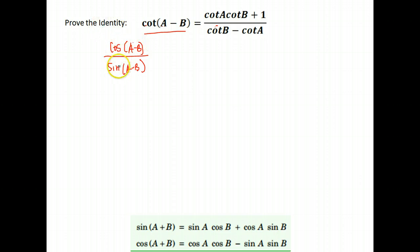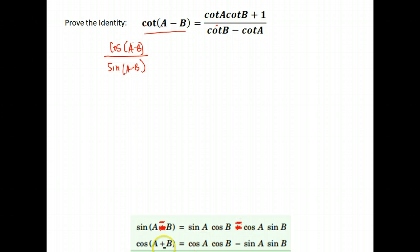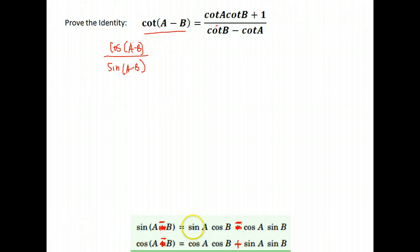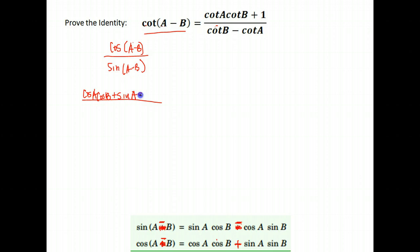Now I can use the identities for subtraction. The identity for sine of A minus B is the same as the sum identity but with a subtraction sign in the middle. The identity for cosine of subtraction is the same but with a plus in the middle. So expanding: the cosine of A minus B is cosine A cosine B plus sine A sine B. The denominator, sine of A minus B, is sine A cosine B minus cosine A sine B.